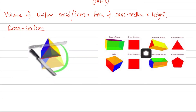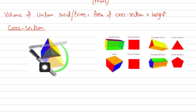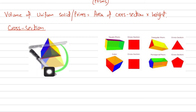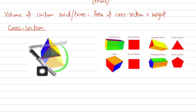Here we have a triangular prism. Visualize the cross section like this: imagine it's made of bread and you take a knife and start slicing it. Every time you slice this prism you get the same shape — a triangle. So its cross section is triangular, which is why it's called a triangular prism. The name is decided by the cross section, not the face it rests on.